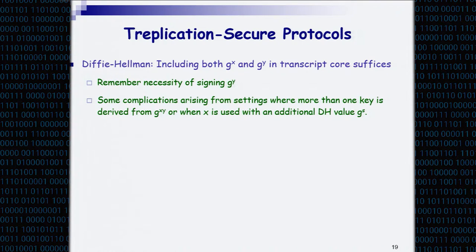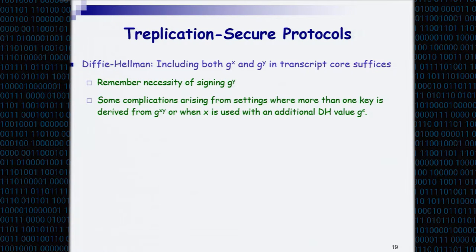I'm not claiming that SIGMAC is good for any protocol — I'm claiming it works for protocols for which you can define a transcript core with respect to which the protocol is replication secure. The good news about Diffie-Hellman protocols is that it doesn't matter what you have around the protocol, as long as the client authenticates the Diffie-Hellman values of both parties — its own and the server's — then we are fine.